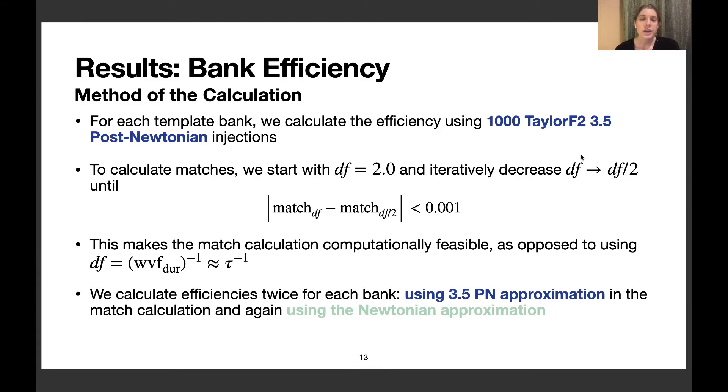For each template bank, we calculate the bank efficiency. We use sets of 1,000 TaylorF2 3.5 post-Newtonian injections. When we calculate the matches, we start with a frequency step of 2 Hz and iteratively decrease it by half until the matches converge, then keep that value. We do this to make the match calculation computationally feasible.